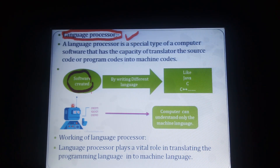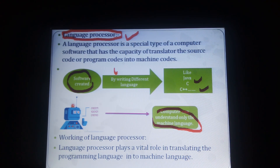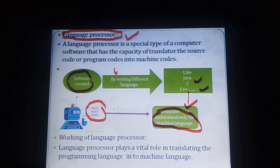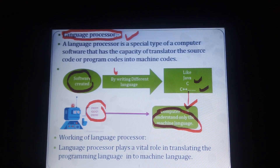Software is created by writing in different languages like C, C++, Java. The computer understands only machine language — that is 0s and 1s, the binary form. The computer cannot understand simple English language. So the language processor acts as a translator, converting whatever language you write into machine code, because it is the machine-understandable format. Language processor plays a vital role in translating programming language into machine language.